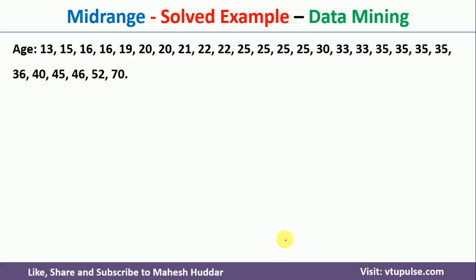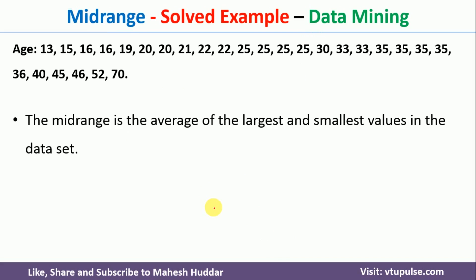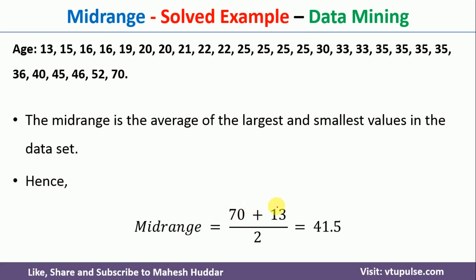Coming back to the next one, that is midrange. Midrange is the sum of the lowest and highest value divided by 2. The lowest value is 13 and the highest value is 47, divided by 2, which is equal to 41.5 in this case.